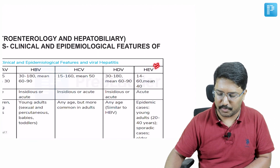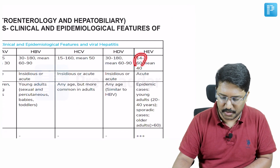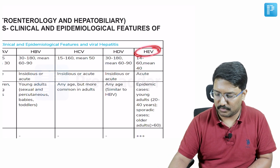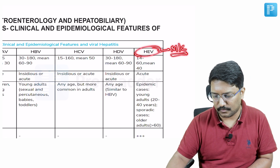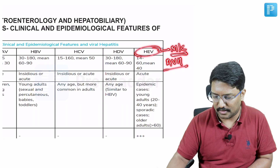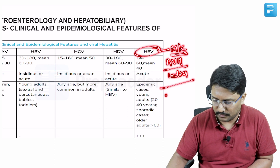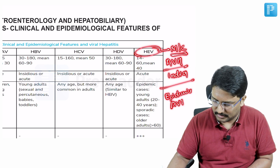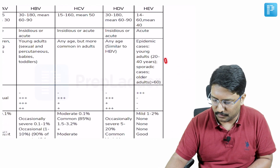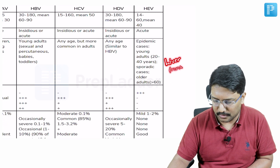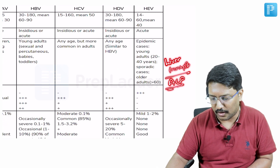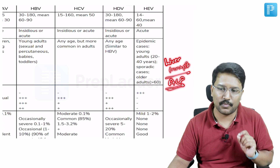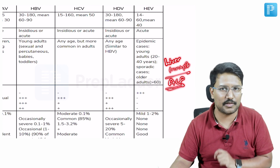The last virus is HEV — hepatitis E. Its incubation period is around 14 to 60 days with a mean of around 40 days. It is the most common virus responsible for acute viral hepatitis in India, the most common cause of outbreaks of acute viral hepatitis in India, and also the most common cause for liver transplantation following acute liver failure in India — more than paracetamol poisoning, drug-induced, or ischemic hepatitis.